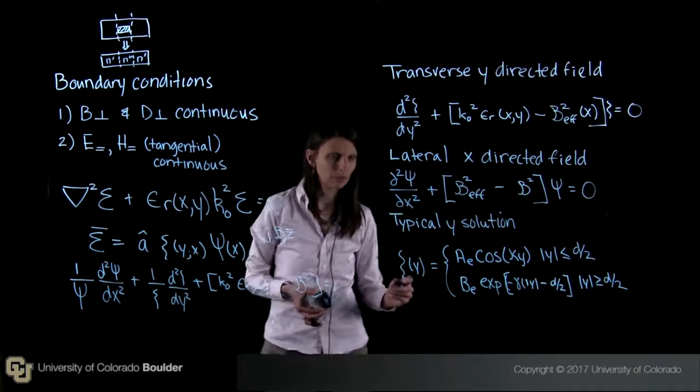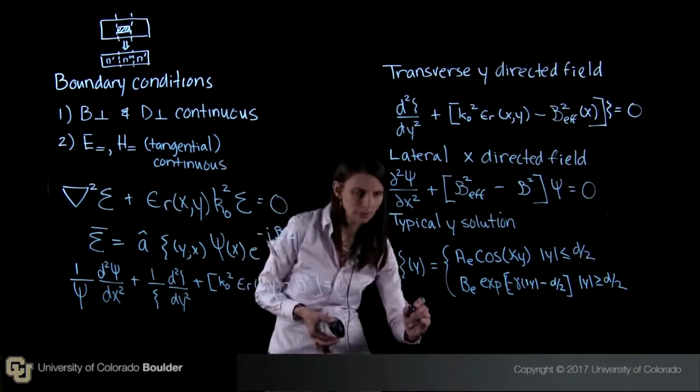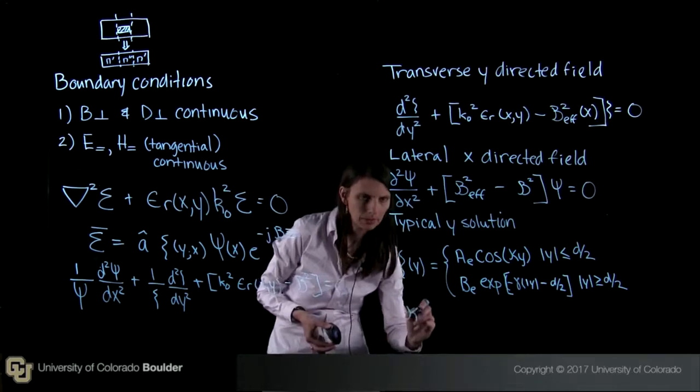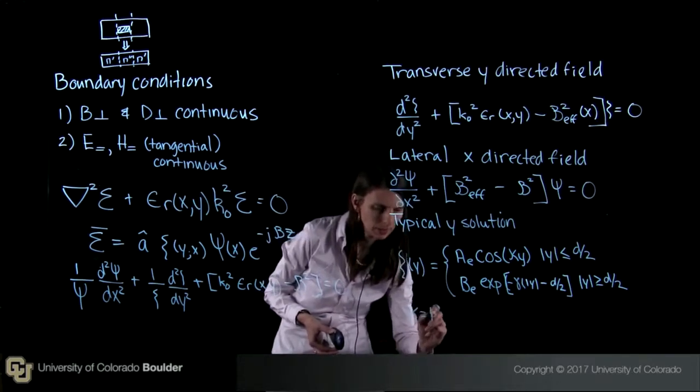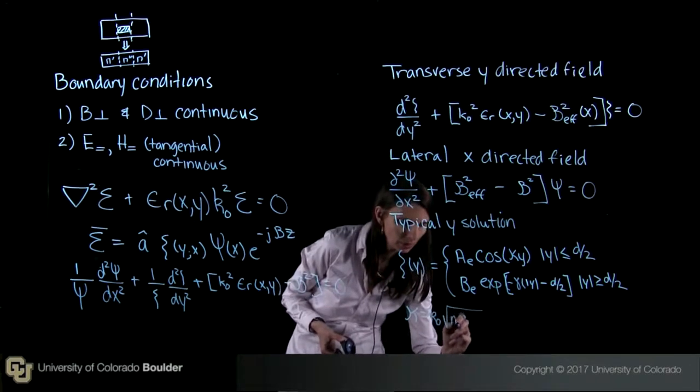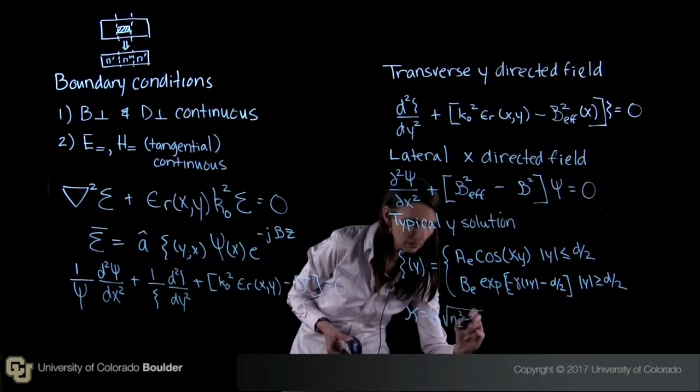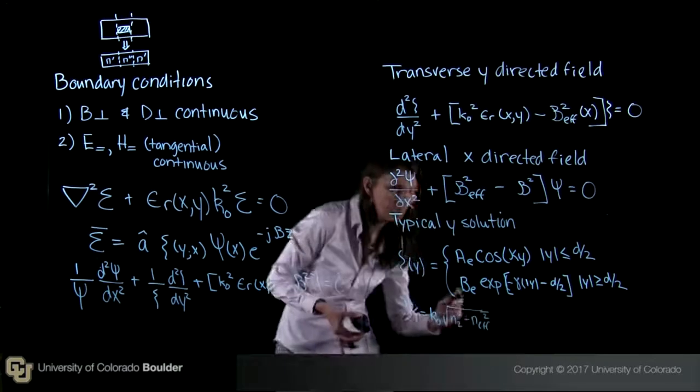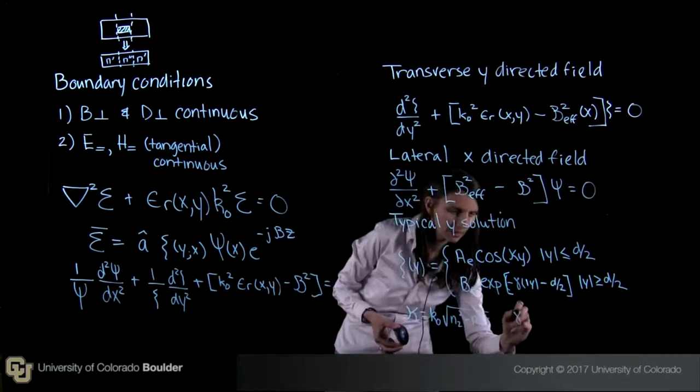We also need to define a couple of variables. So we can define kappa, and this is equal to k-naught. And then here, this becomes n2 squared minus n effective squared.